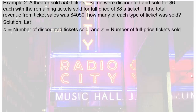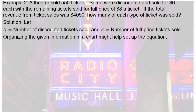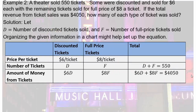We need some variables. Let D be discounted tickets and F be full price tickets. Our chart shows $6 per discounted ticket and $8 per full price ticket. D is the number of discounted tickets, so 6D is the money collected from discounted tickets. 8F is the amount from full price tickets. The total tickets sold is 550, so D plus F equals 550. The total money from ticket sales is $4,050, so 6D plus 8F equals 4,050. Now you have a system of equations — solve.